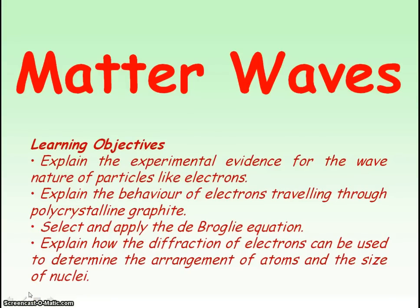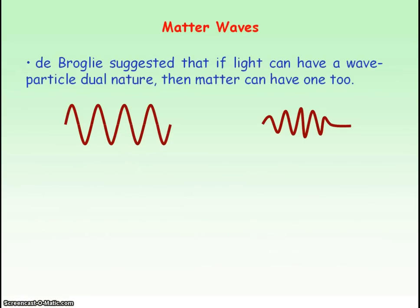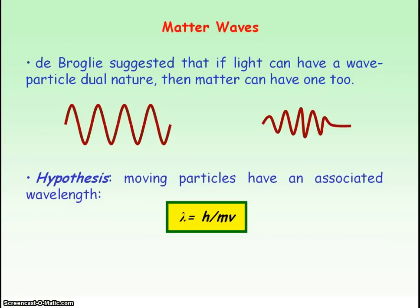We're going to be looking at matter waves — particles behaving as waves. De Broglie suggested that if light can have a dual nature, that is, it can behave like a wave and like a particle, then matter can also have a dual nature. He hypothesized that moving particles can behave like waves, and so they have a wavelength given by Planck's constant divided by the mass times velocity of the particle.